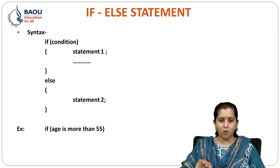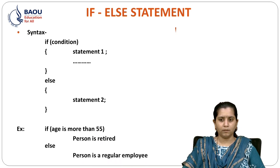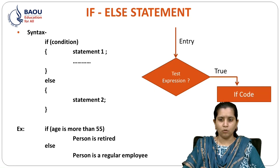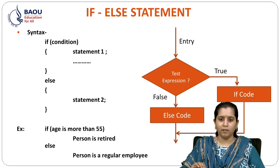Let's see one smaller example: if age is more than 55, then person is retired; otherwise, person is a regular employee. In the flowchart of IF ELSE statement, first it will test our condition — if it is true, then the IF code is executed, and if the condition is false, then the ELSE code will be executed.